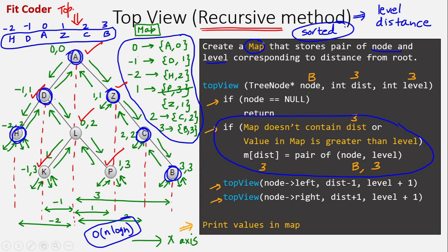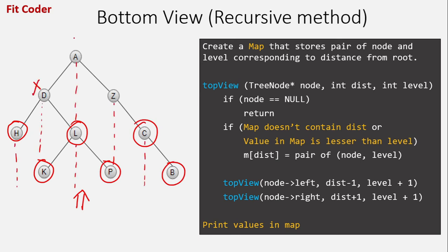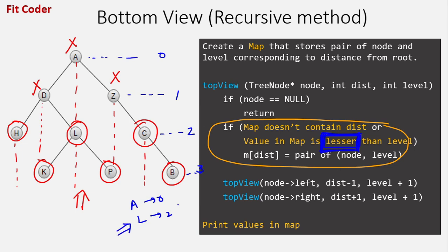Now let's see what changes are required to print the bottom view. When we view this tree from the bottom, we'll see nodes h, k, l, p, c and b. So d will be hidden by k, a will be hidden by l, and z will be hidden by p. The code for bottom view is similar to the top view - the only difference is in the if statement. Here you have to check if the value in map is lesser than the level. Because we are viewing the tree from the bottom, we pick those nodes which are at a higher level. So only this condition is different; everything else is the same as the top view.